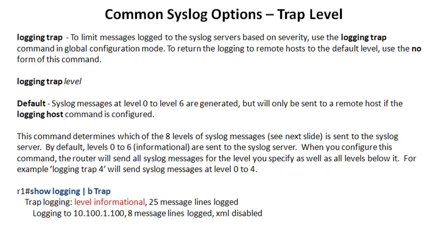There are eight levels, zero through seven. Zero is like critical — we'll see in the next slide. You can refer to them either by their numerical value or by their description. For instance, debugging is level seven, so you could either put logging trap seven or logging trap debugging. Again, we'll see that in the next slide.